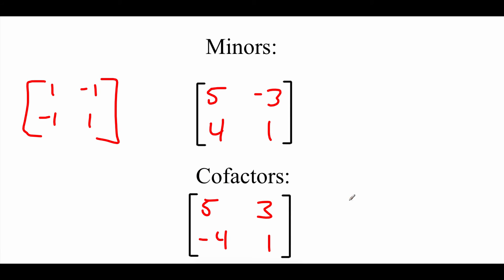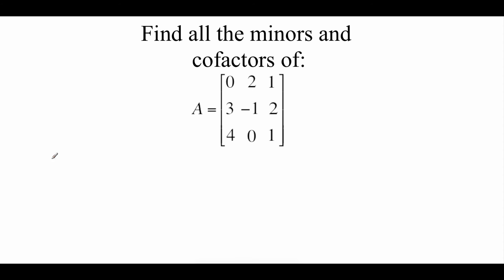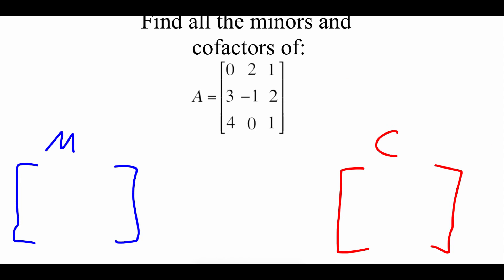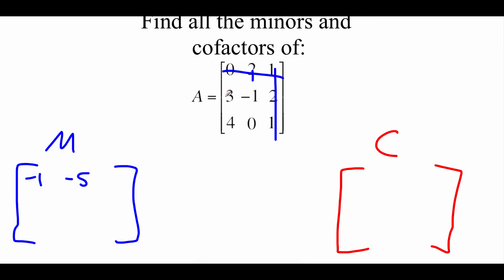So that is our cofactor matrix based on our minor matrix, which was based on our original matrix. Now we look at a 3x3 example — we'll build a minor matrix M and then a cofactor matrix C. Starting with row and column deletion: crossing off first row and first column, we get negative 1 times 1 minus 0, which equals negative 1. For first row, second column: 3 times 1 is 3, minus 8 is negative 5. For first row, third column: 3 times 0 is 0, minus negative 4 gives positive 4.